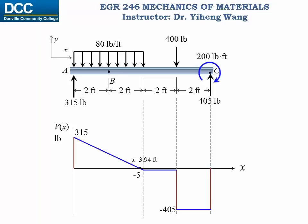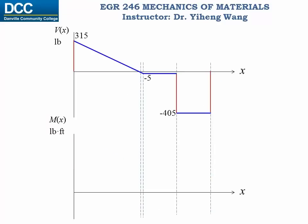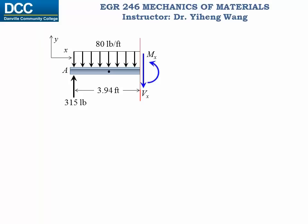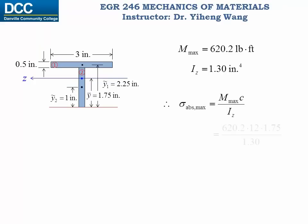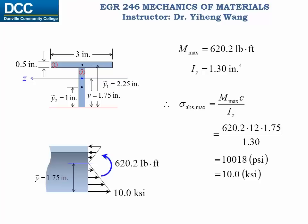Where the shear force equals zero, there is a possible maximum or minimum bending moment. Sketching the bending moment diagram following the same rules, we can see there is indeed a maximum bending moment that we need to determine. We find it through a method of section analysis at location 3.94 feet. That gives our maximum bending moment, and using the moment of inertia and the flexure formula, we determine the absolute maximum normal stress.